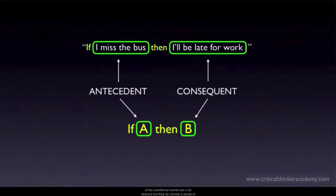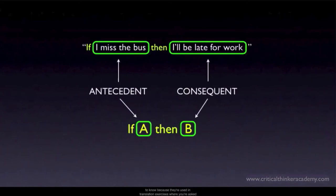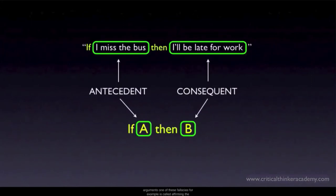The names are a bit obscure, but they do convey a sense of the role the claims are playing. 'Antecedent' means what comes before; the consequent is a consequence of what has come before. The names are handy to know because they're used in translation exercises and to identify the most common logical fallacies associated with conditional arguments — one of these is called affirming the consequent.